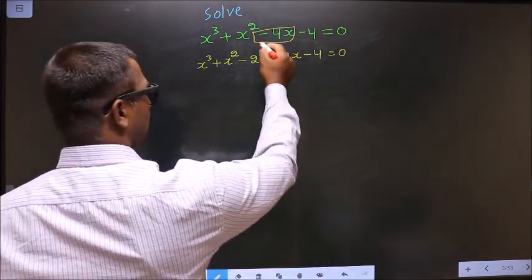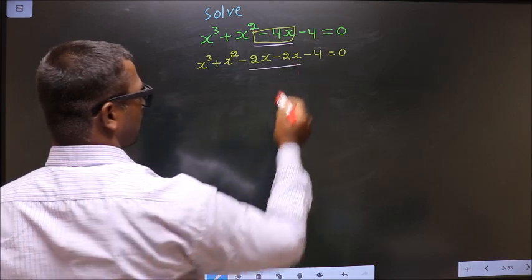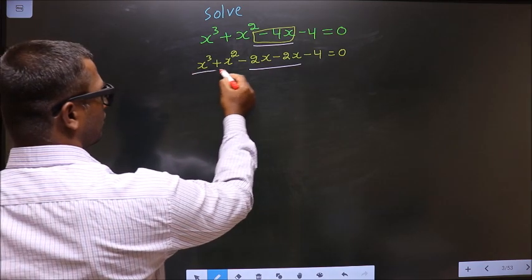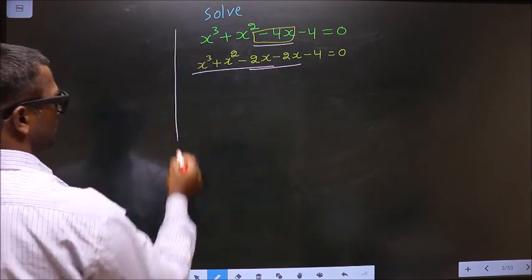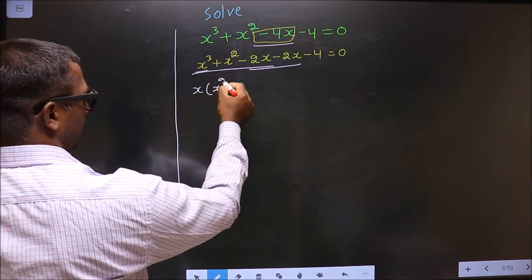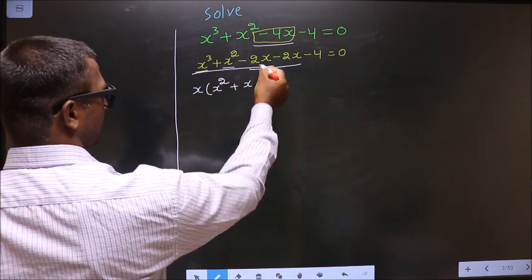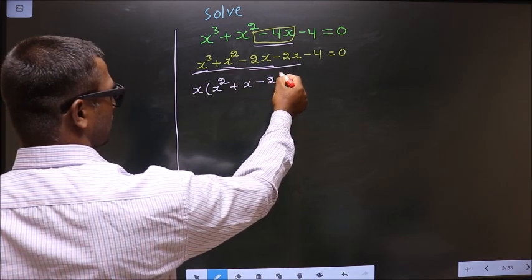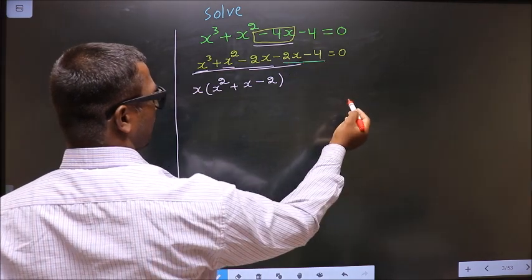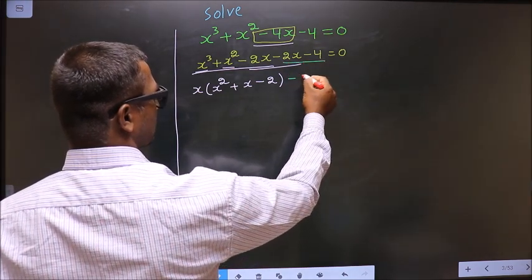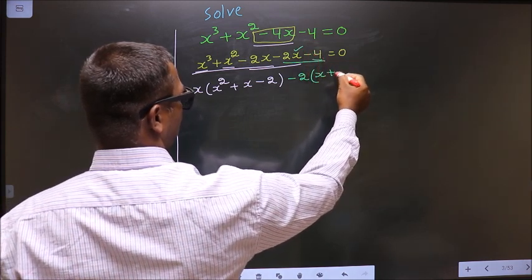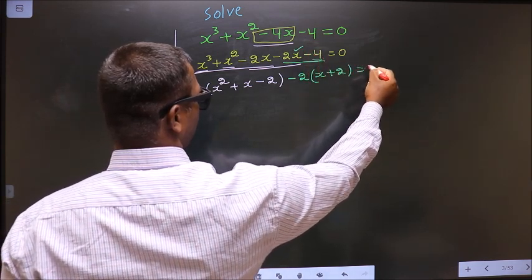In place of minus 4x, I have written this. What can you take out common from these 3 terms? It is x. So here you get x square and here x, and here you get minus 2. From these 2, what can you take out common is minus 2. So here you have x and here you get plus 2 equal to 0.